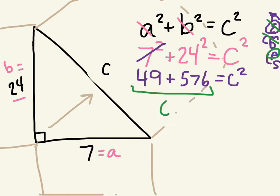and that gives me 625. And I keep that equal C squared part, because I have no information on it so far.